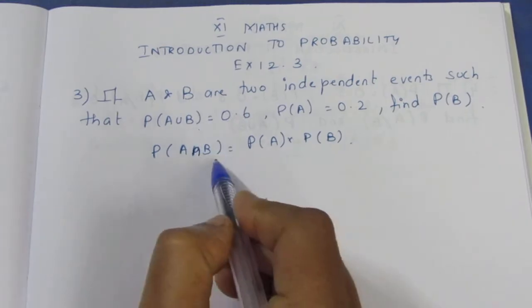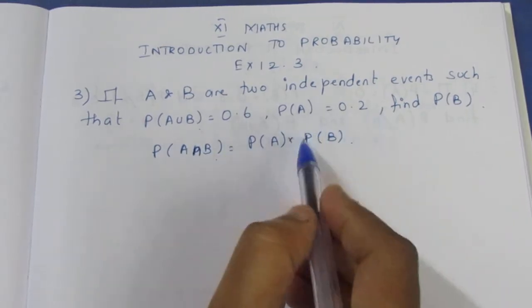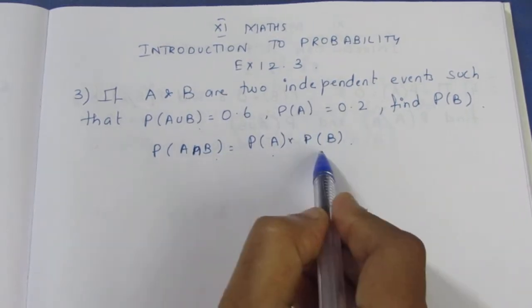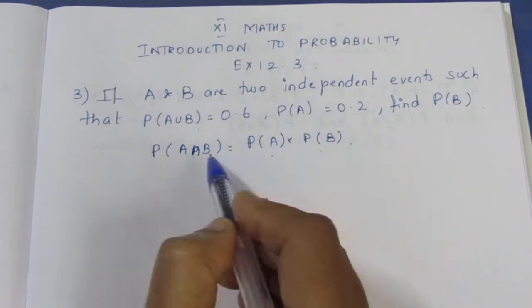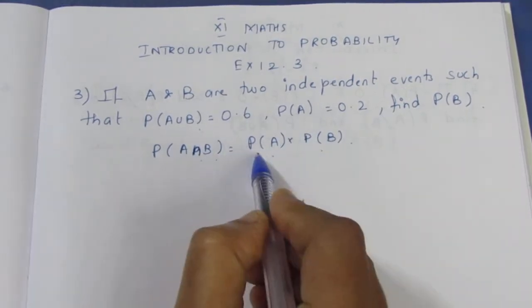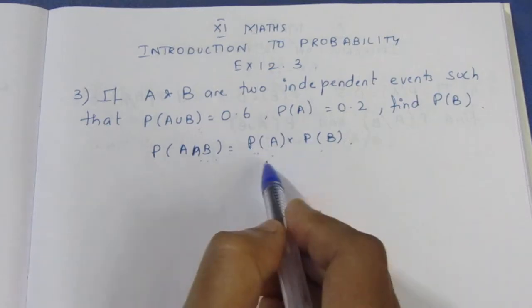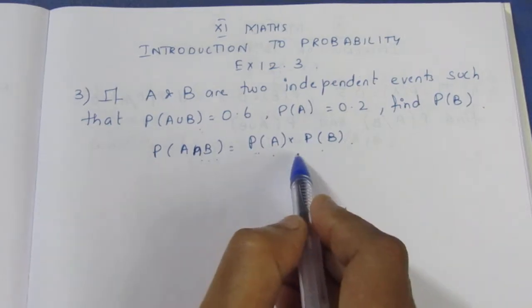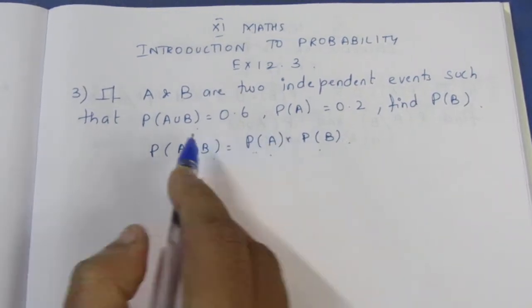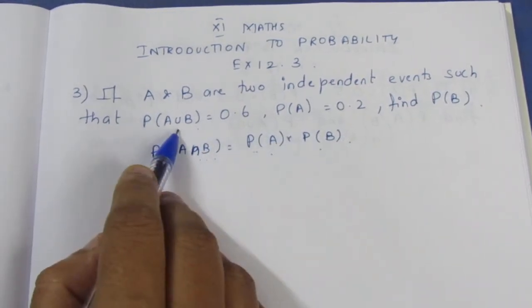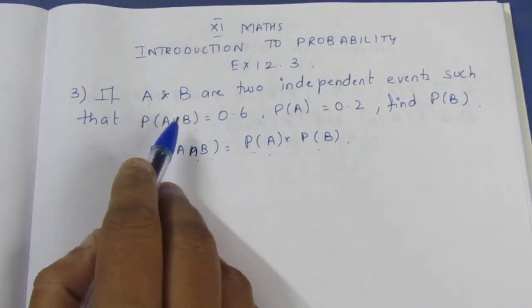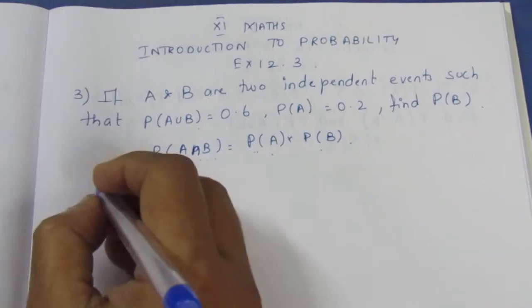Here, union is given — not intersection. P of A is known, but P of B is unknown. So we cannot directly apply the intersection formula. We need to look at what is given: union. So we use the union formula.